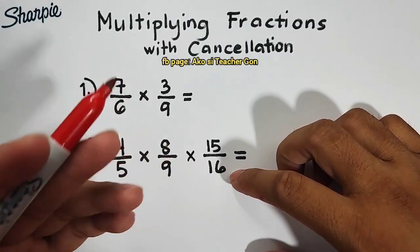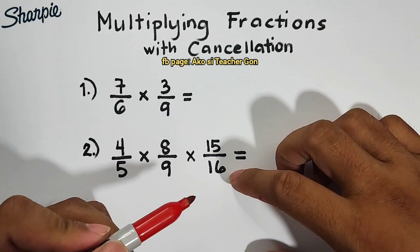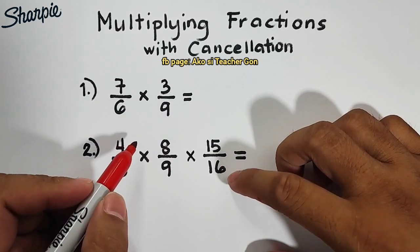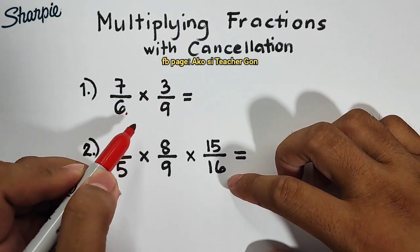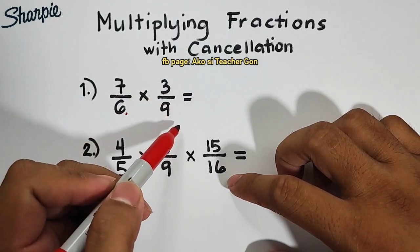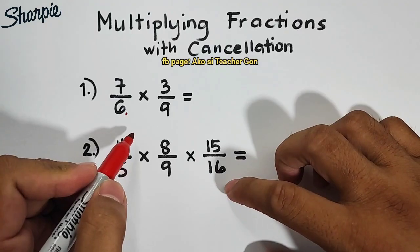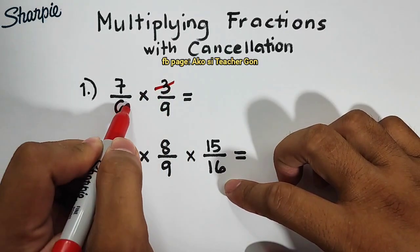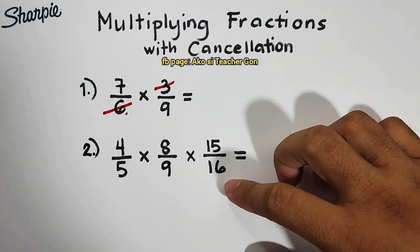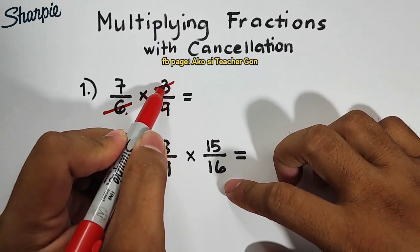So, you need to observe. What we can cancel is the top with the bottom. So, as you can see, we have here 6 and 3. We're more used to cross cancellation. So, we will try to cancel out 3 and 6. They have a greatest common factor of 3. So, when we divide 3 by 3, that is equal to 1.